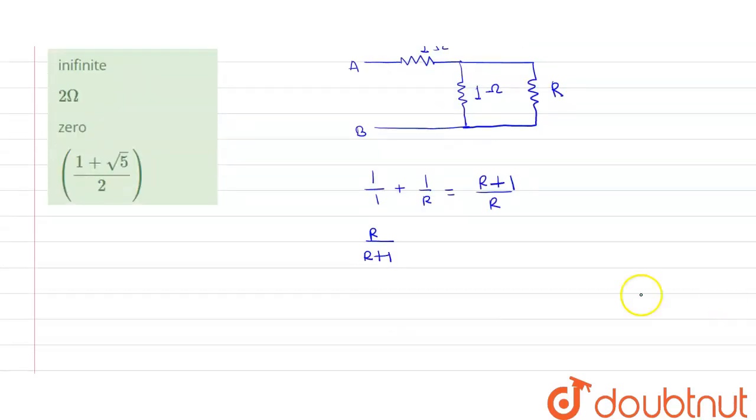Now the circuit will change to, this will be A and this will be, sorry, this will be 1 ohm and this will be R upon R plus 1. So these two are in series. This is point B.